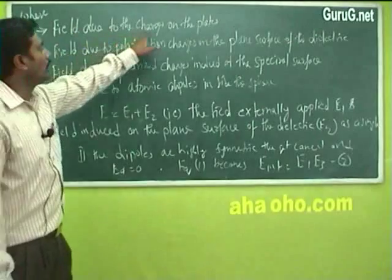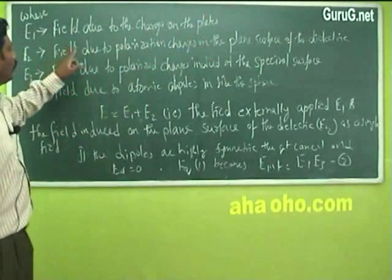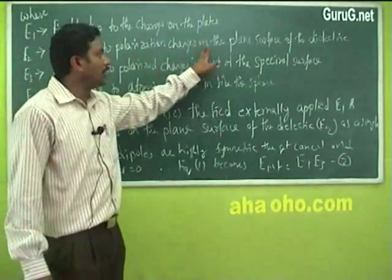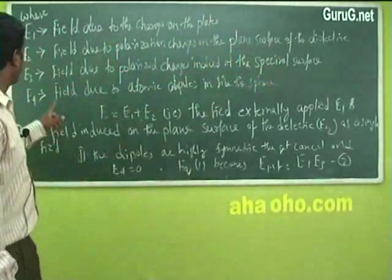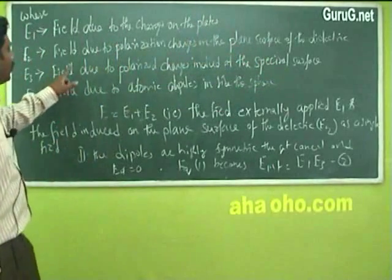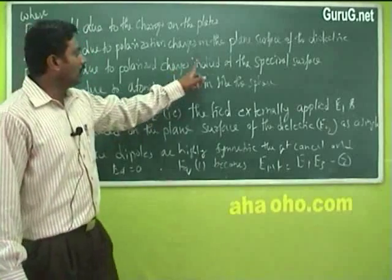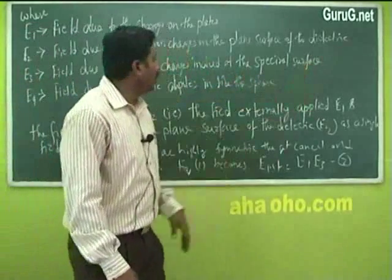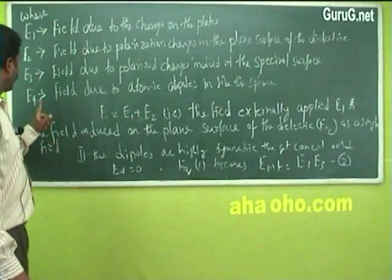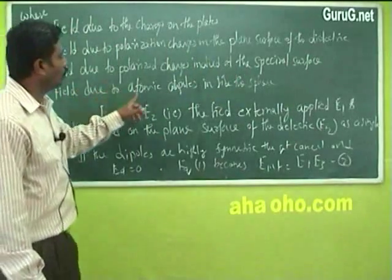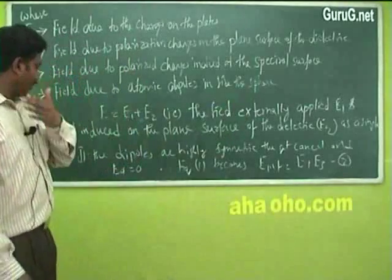E1 is the field due to the charges on the plates. E2 is the field due to the polarization charges on the plane surface of the dielectric. E3 is the field due to the polarized charges induced at the spherical surface. E4 is the field due to the atomic dipoles inside the sphere.